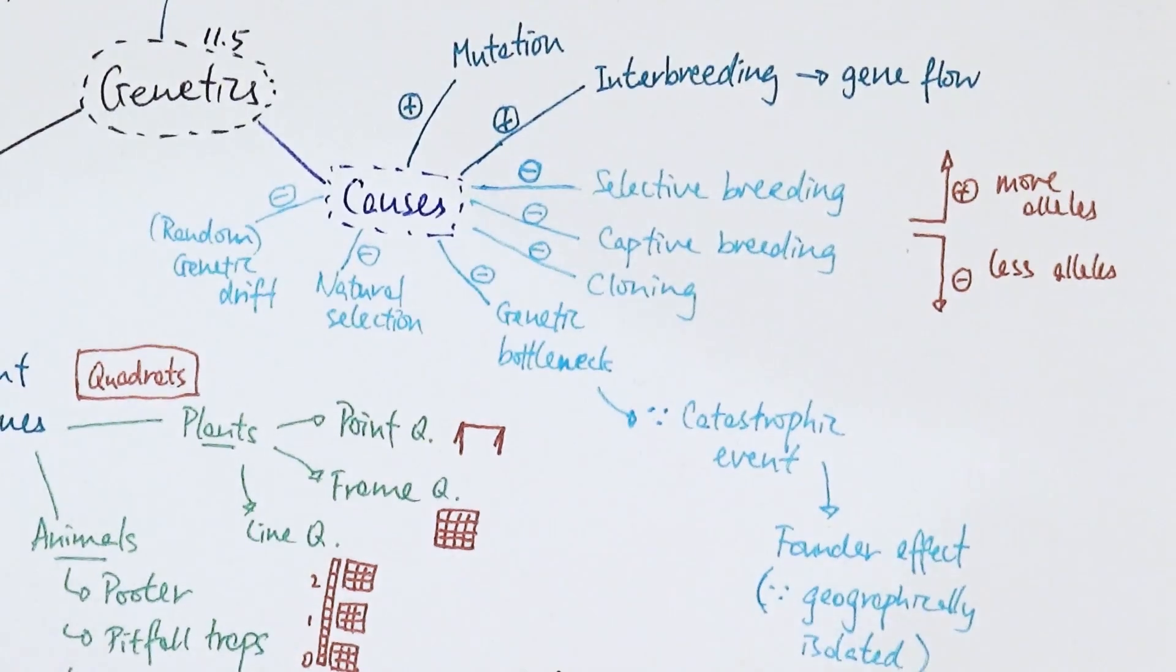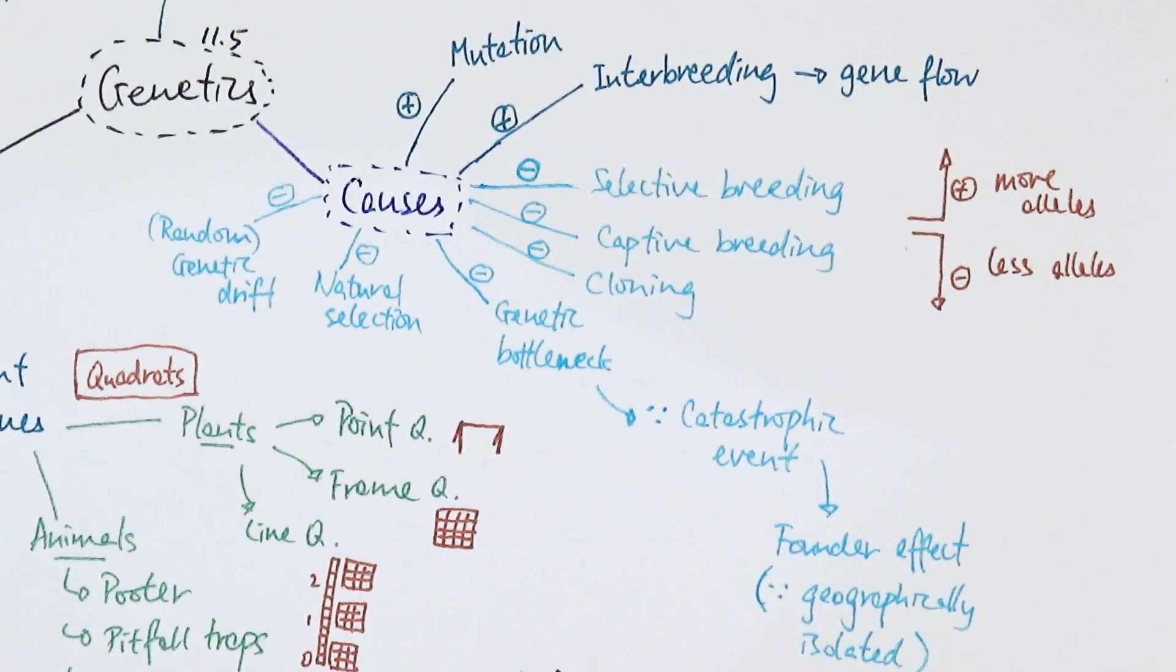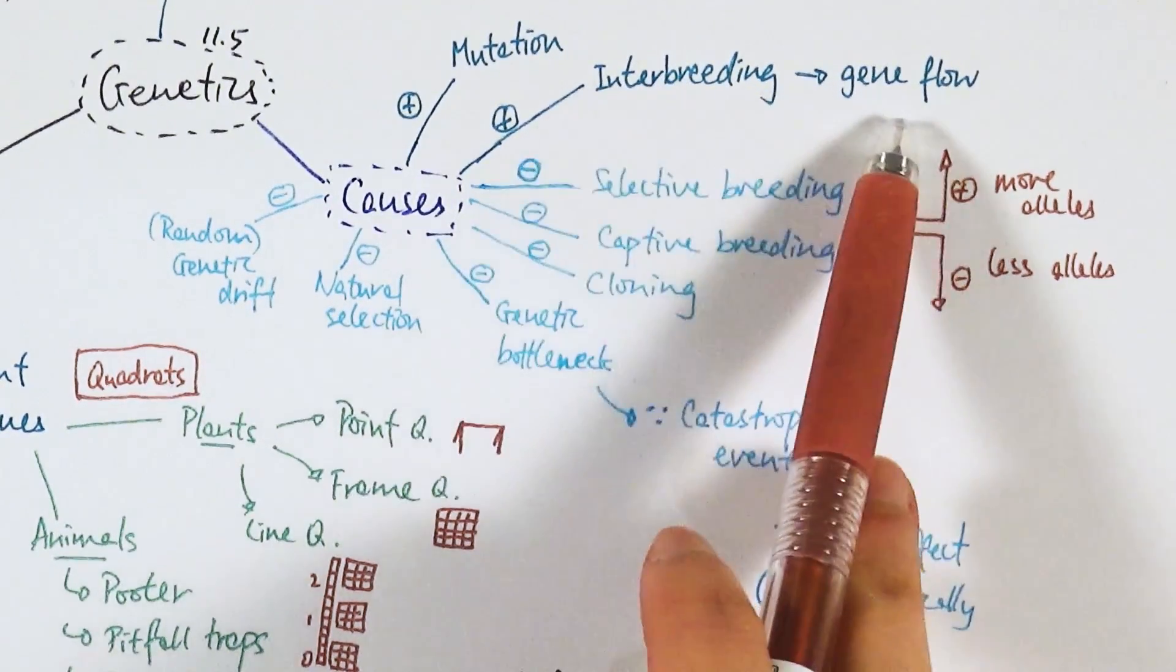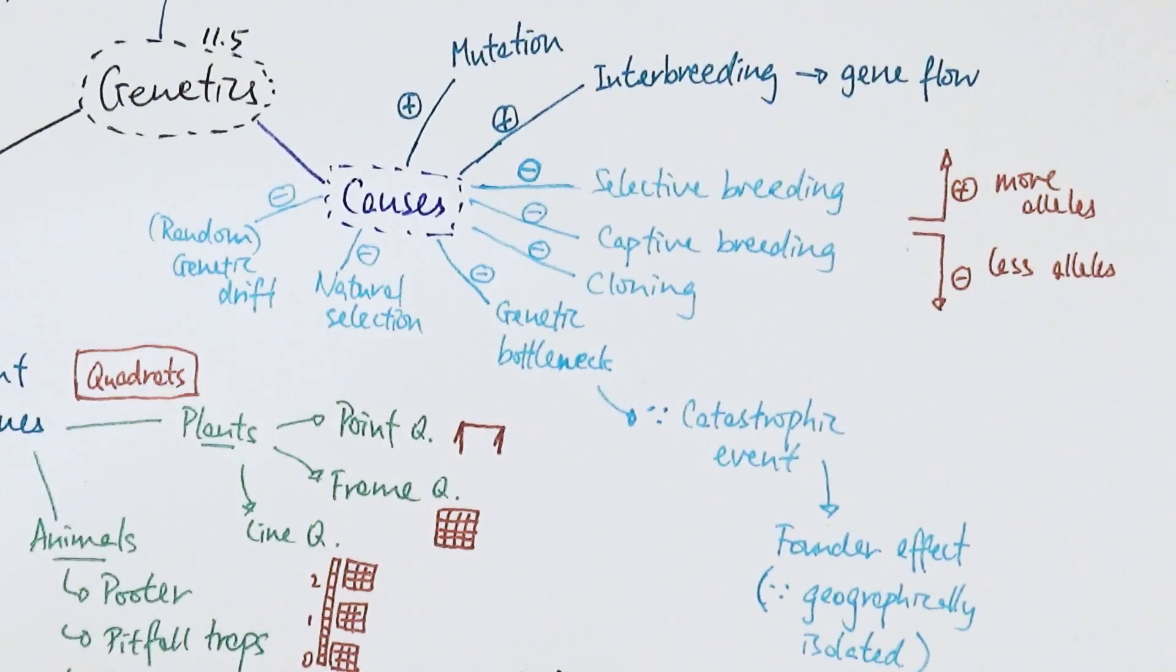Increasing genetic biodiversity happens through random mutation—a mutation increasing the number of alleles. Interbreeding can lead to gene flow. For example, one individual moves from place A to place B and breeds with individuals in place B, causing a change in genes or alleles. Those from place A have a specific set of alleles, and place B may have different sets, so interbreeding leads to gene flow and increased alleles.